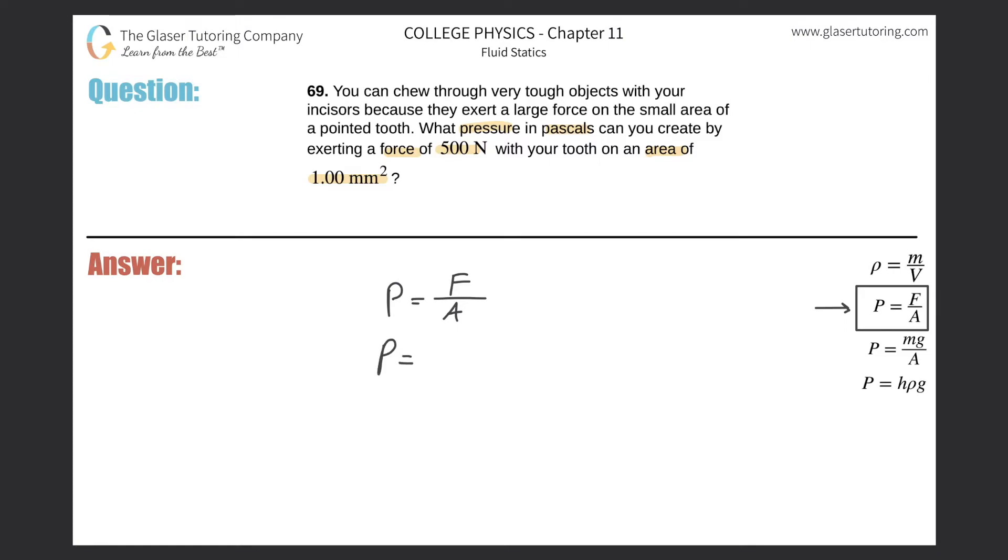The area though has to be in terms of meters squared. We have millimeters squared, so we can just do a quick conversion. I'll do it on the side over here: it's basically one millimeter squared multiplied by a conversion factor with millimeters on the bottom, meters on the top. There's a thousand millimeters for every one meter.